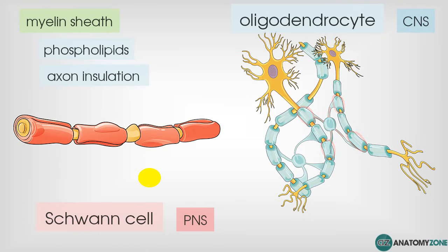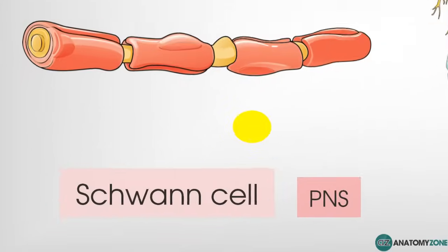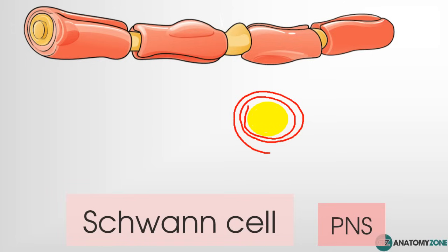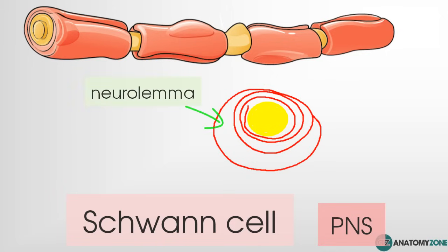Looking at a cross-section of an axon, we can see the different layers of the Schwann cells. Close to the axon, the layers are very tightly together and these tight layers don't contain cytoplasm. It's only the outer layer of the Schwann cell which contains the cytoplasm and the nucleus. This outer layer of cytoplasm in the Schwann cell is called the neurolemma.